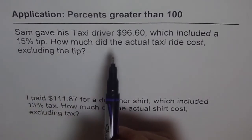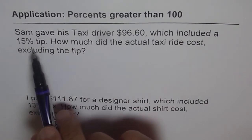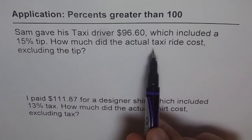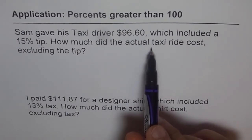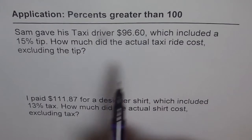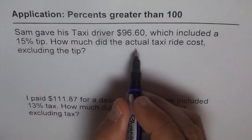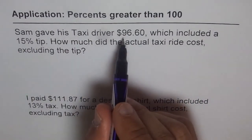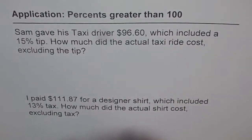Sam paid more than the actual cost — and how much more? He paid 15% more. So whatever he would have paid, that was 100%. So instead of 100%, the amount paid is 100 plus 15%, which means the cost plus 115% should be equal to $96.60. That is how you should understand this type of question.